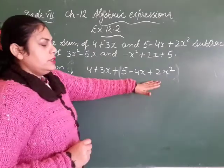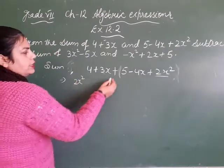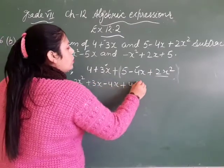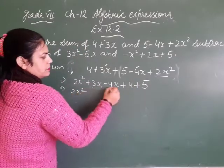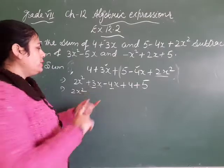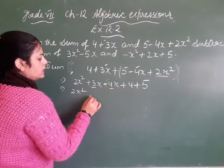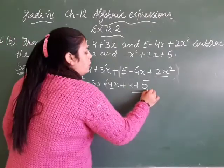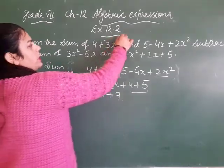First step mein hum like terms collect karenge. Highest power: 2x². Then x wali terms: 3x minus 4x. Then constants: 4 plus 5. Coefficients 3 and -4 — one positive, one negative — so subtraction hogi: 4 minus 3 = 1, aur greater term ka sign minus hai, so result is minus x. Then 4 plus 5 = 9, same sign. So the sum of these two expressions is 2x² - x + 9.